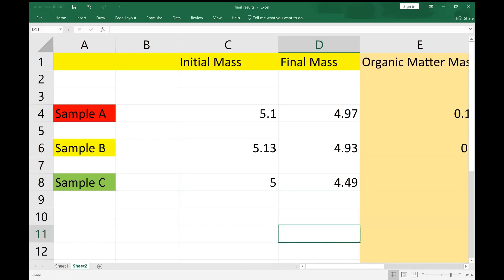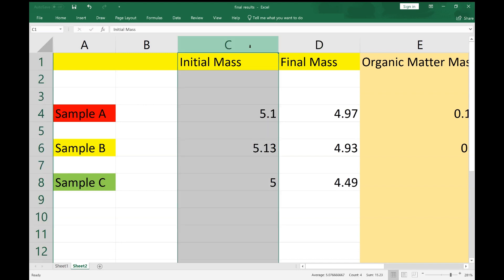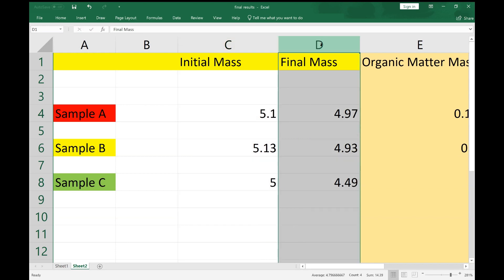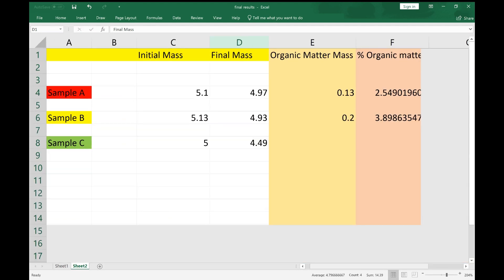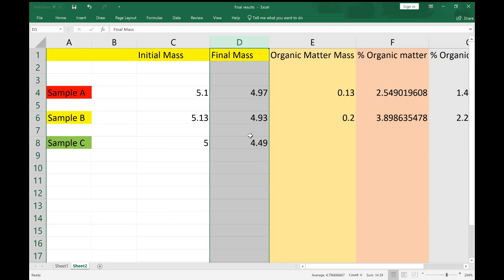Now we come to our results. Our initial mass is seen here in column C for samples A, B, and C. Our final mass, after we have burnt off the organic matter, is in column D. So how do we calculate, how do we do our analysis? To calculate the mass in grams of organic matter, all we have to do is subtract our final mass from our initial mass.